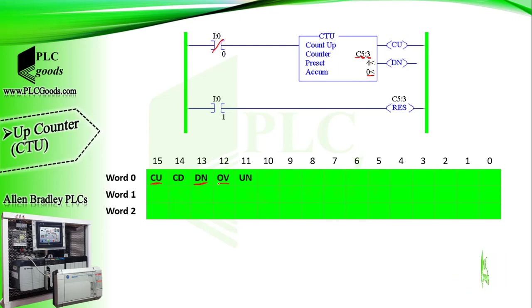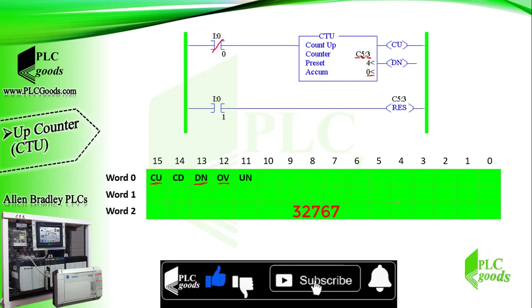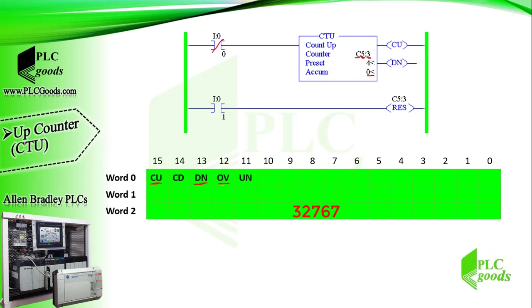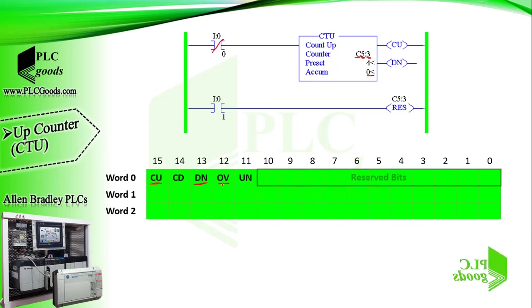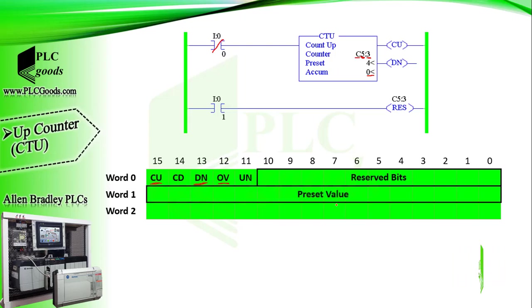What is the overflow bit, OV? Pay attention — 32767 is the maximum number which can be stored with 16 bits. So any time the accumulated count exceeds the upper limit of plus 32767, the OV bit sets to 1. The underflow bit, UN, is used for down counters. Other bits in word 0 are reserved. The next word is used to store the preset value, and the last word is used to store the accumulated value.